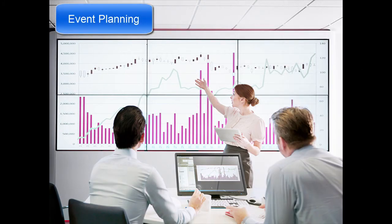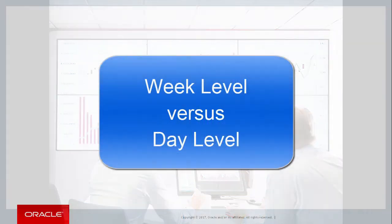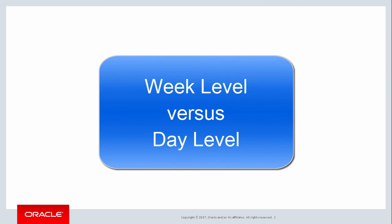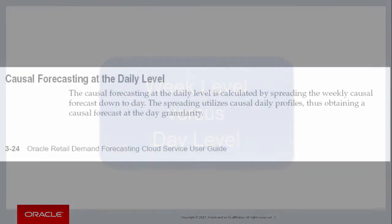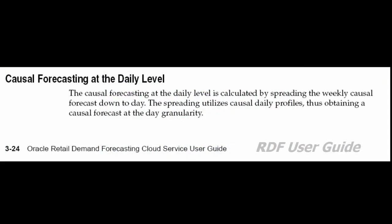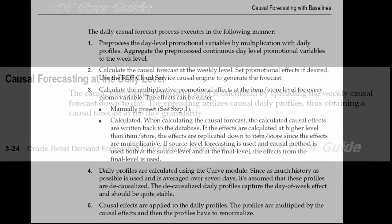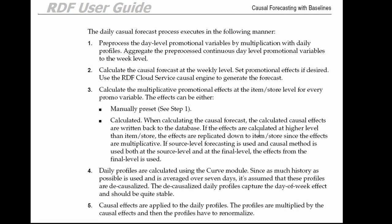Our last best practices suggestion deals with promotional forecasting. Our solution specialists recommend running the causal forecasting at the week level versus the day level. If the causal forecast is needed at the day level, set the causal calculation intersection to the week level and the solution will automatically spread the weekly forecast to the day level. For more information, see the user guide to learn more about causal forecasting at the daily level, including how the daily causal forecast process executes.